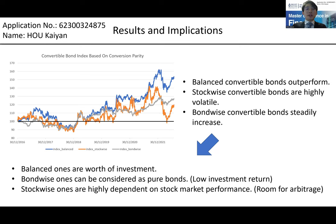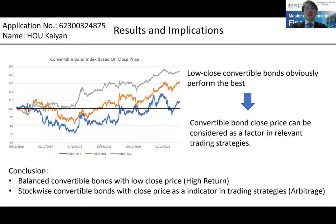Sixth part is results and implications. This page shows the Kanban index based on conversion parity. The blue line is the index for balanced Kanban. Obviously, this bond outperforms, which indicates that under the protection of the bond portion, this Kanban will offer relatively high return. Stock-wise ones are highly volatile and similar to stock performance, and thus investors could trade them for arbitrage. Bond-wise ones are more like pure bonds. This page shows the Kanban index based on close price. The green line index for low price performs the best. So traders may use Kanban close price as a factor to judge the growth potential of any Kanban in relevant trading strategies.